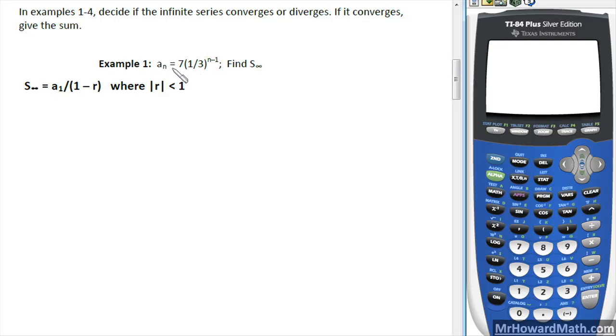Example 1 says a sub n equals 7 times (1/3)^(n-1), find S sub infinity. We look for the r value. The r value is the part raised to the exponent, so that would be 1/3. Its absolute value is less than 1. Therefore, this will converge so we can actually get a sum.